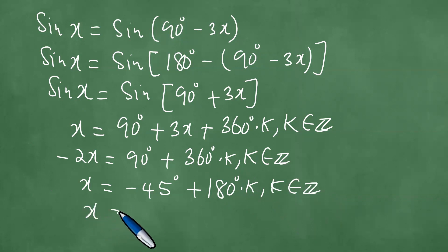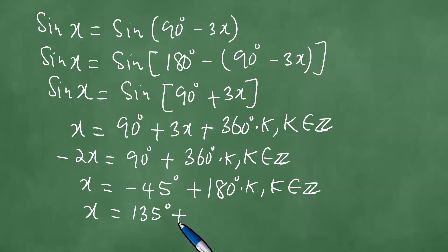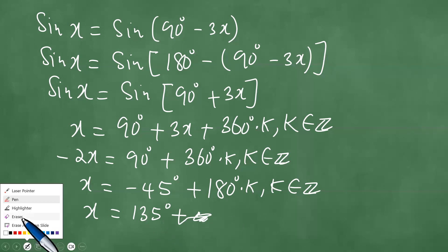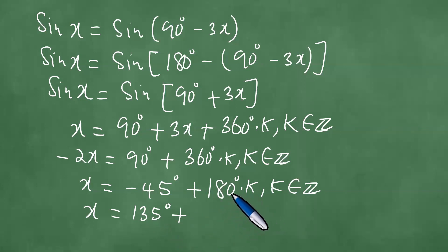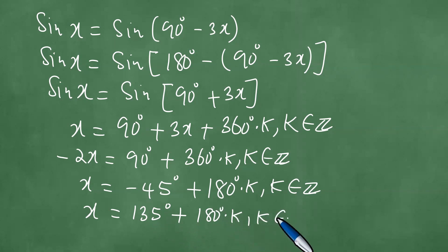So this is exactly the same as 135 degrees plus 180 degrees times k — because if k equals 1, we have 180 degrees minus 45, which is 135 degrees — plus 180 degrees times k, where k is an element of the set of integers. So that gives us a possible solution as well.